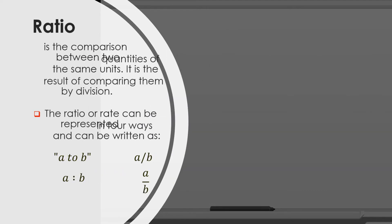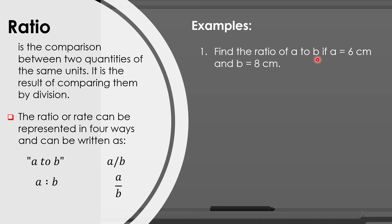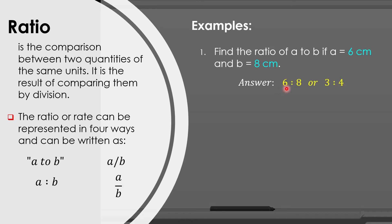So let us have some examples related to a ratio. Number one: find the ratio of A to B if A is equal to 6 cm and B is equal to 8 cm. Since they have the same units, we simply write the ratio of A to B, which is equal to 6 is to 8, or 3 is to 4 by getting the simplest form.